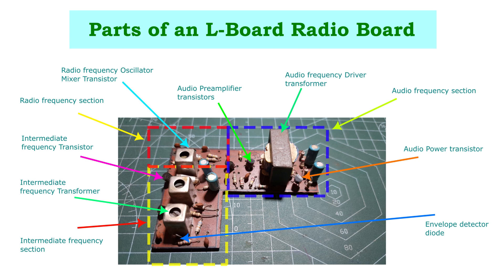The output signal from the oscillator-mixer stage is then amplified using a 455 kHz intermediate frequency amplifier. The intermediate frequency amplifier has two stages of amplification, which provides adequate amplification of the radio signal. It also has an AGC section which manages the fading characteristics of a radio signal. At the output of the final IF amplifier stage, the signal is demodulated using an envelope detector. The envelope detector demodulates the amplitude modulated radio wave into its corresponding audio signal.